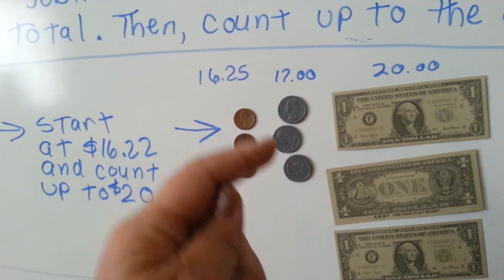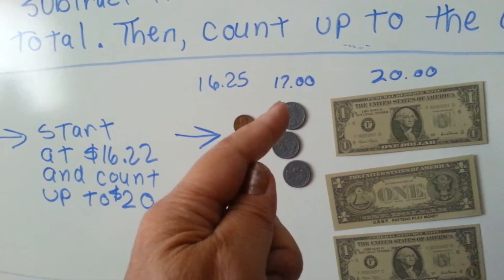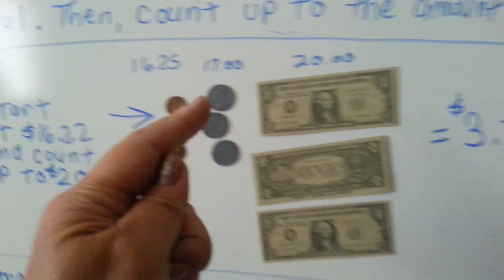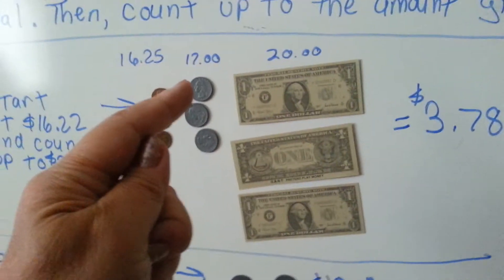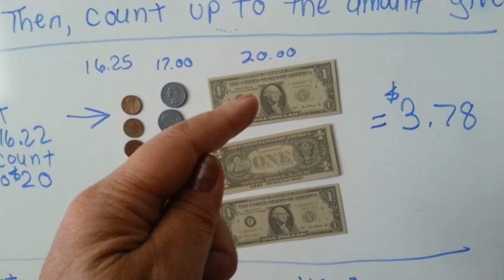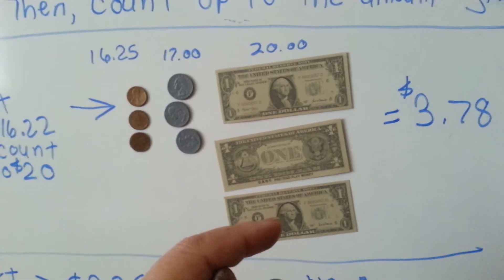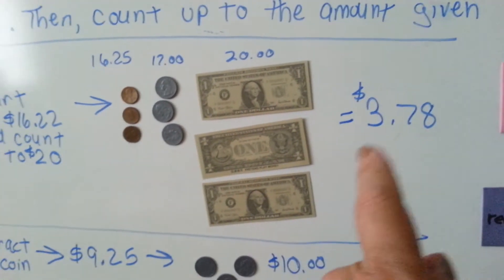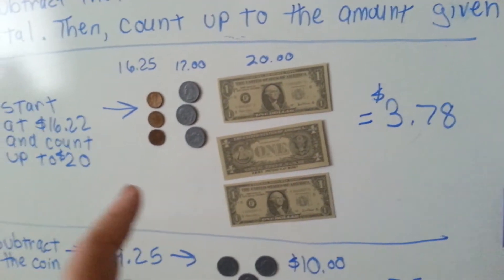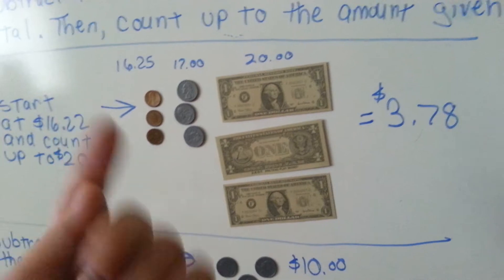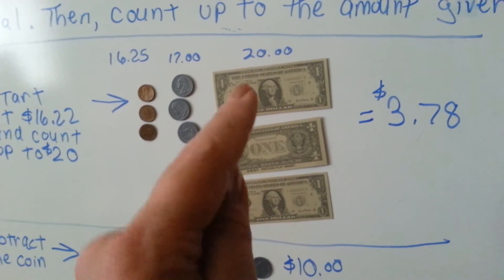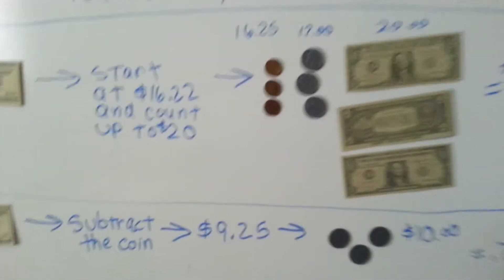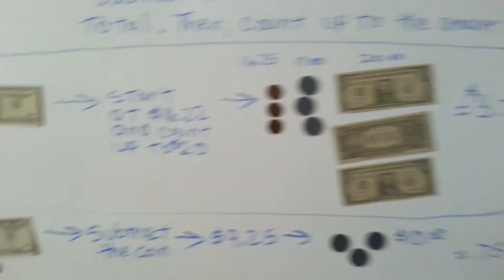If you give them three more quarters, you will be at $17. Then $18, $19, $20. So you've given them $3.78 by counting up to the $20. And you count it out as you give it to them.